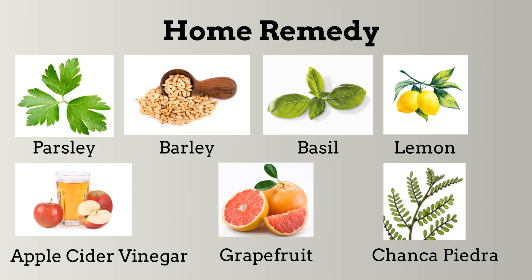Barley water may contribute to kidney and liver health. Basil contains acetic acid, which helps break down kidney stones and reduce pain. Lemon contains citrate, which helps prevent calcium from building up and forming stones in your kidney. Apple cider vinegar may help reduce pain and inflammation from kidney stones. Grapefruit is another great citrus juice which keeps your kidney healthy. Finally, phyllanthus niruri is a tropical plant found in coastal areas, also known as a stone breaker for its potential as a cure for kidney stones — the herb has alkalizing properties that may help prevent gallstones and acidic kidney stones from forming.